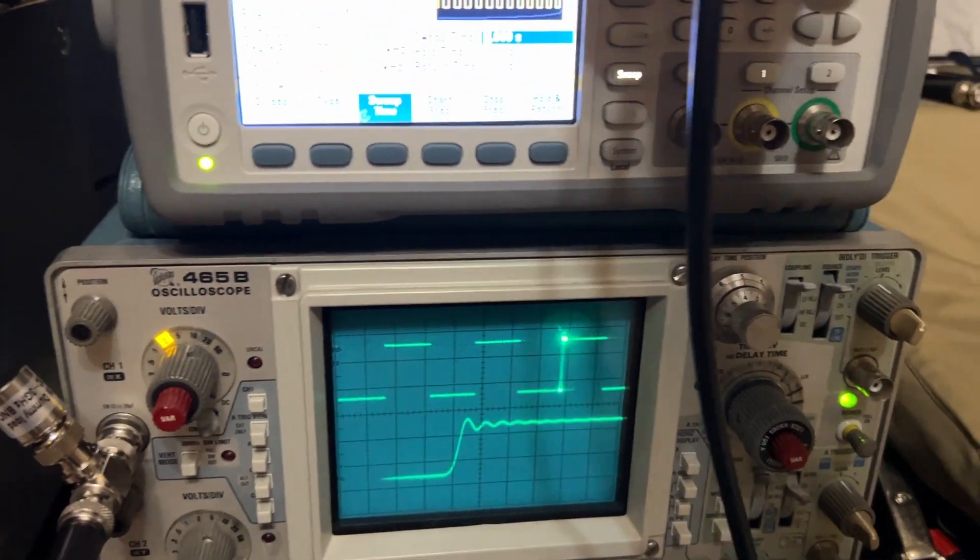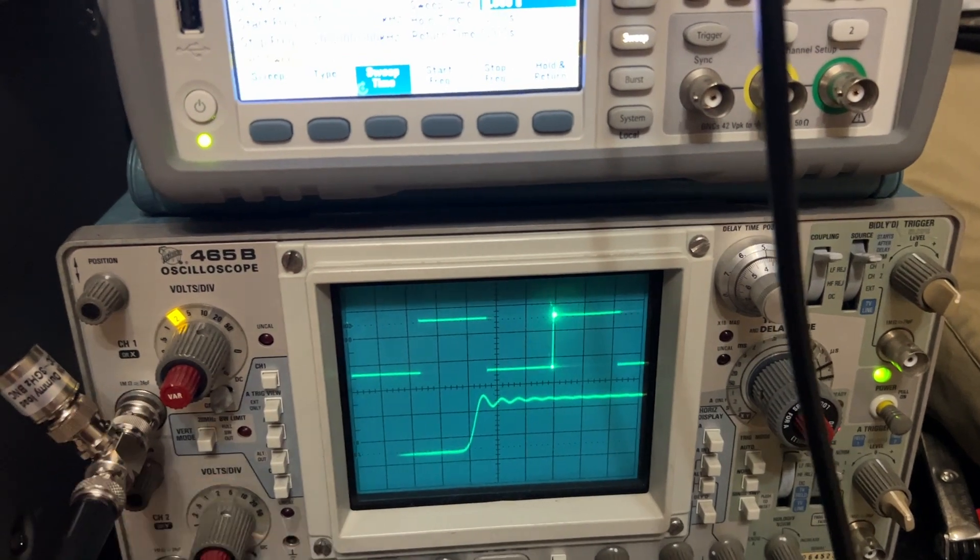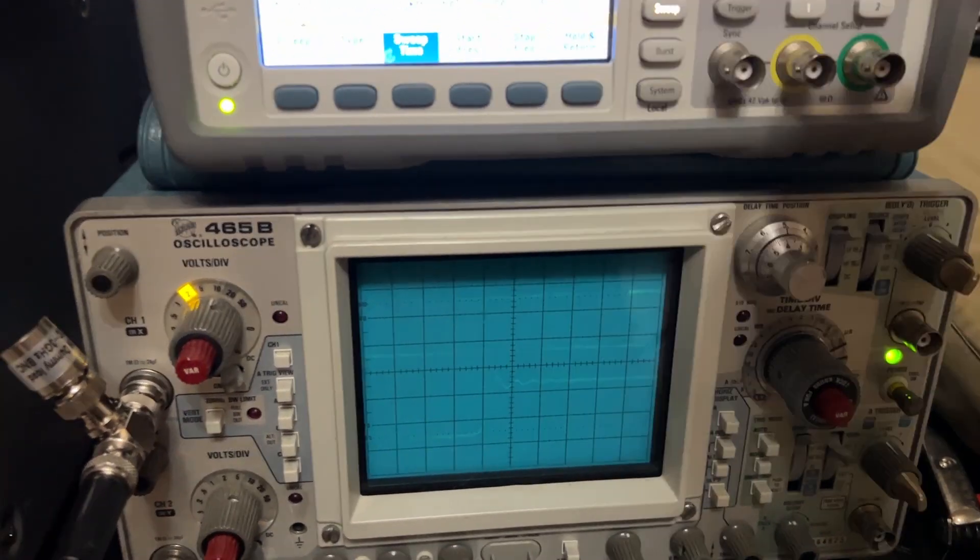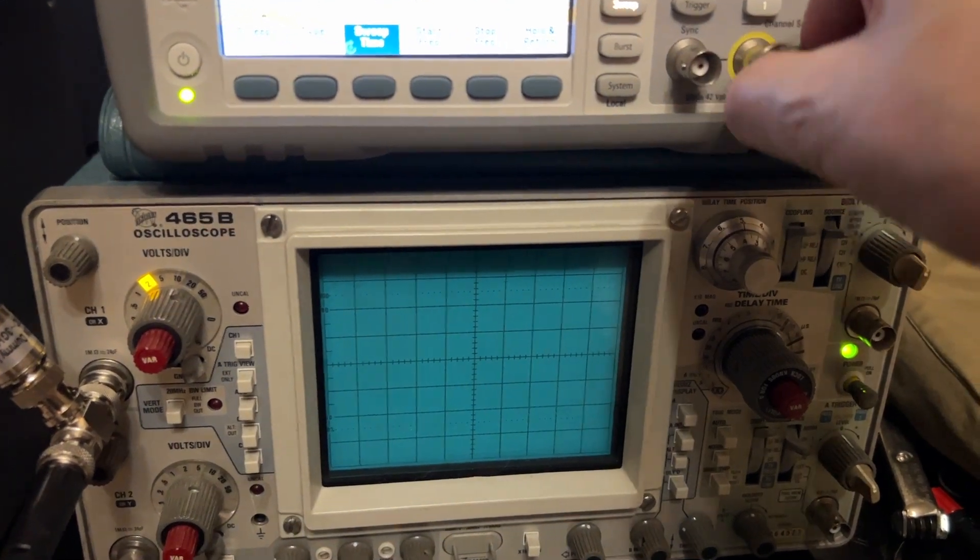Put it back to the top one here. In both cases there's a 50 ohm terminator. That's the Rigol there, and then this is the Agilent.